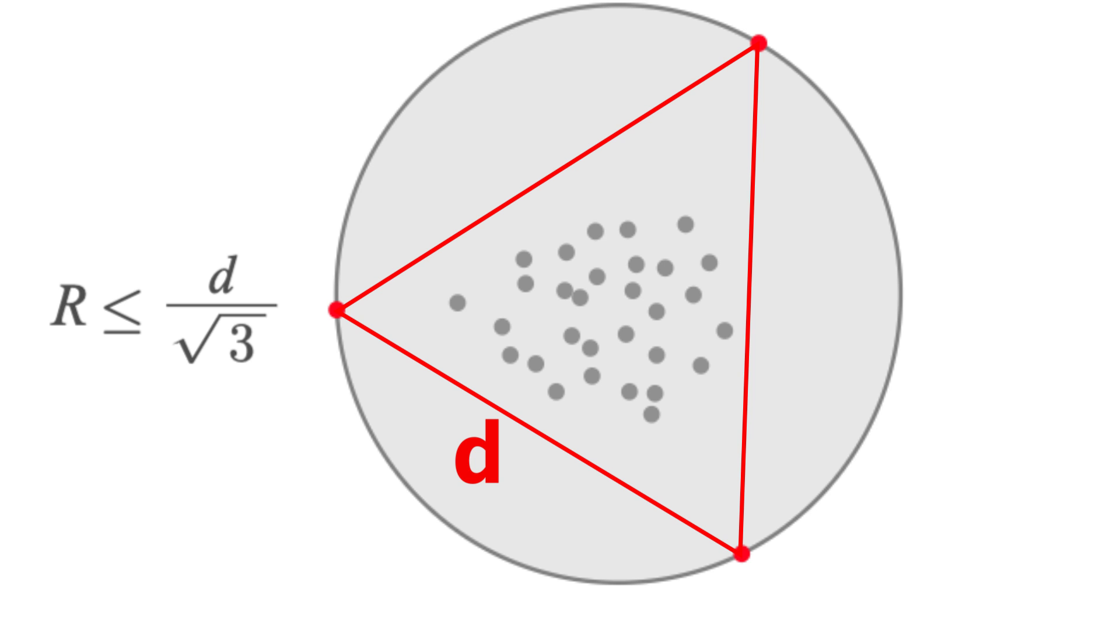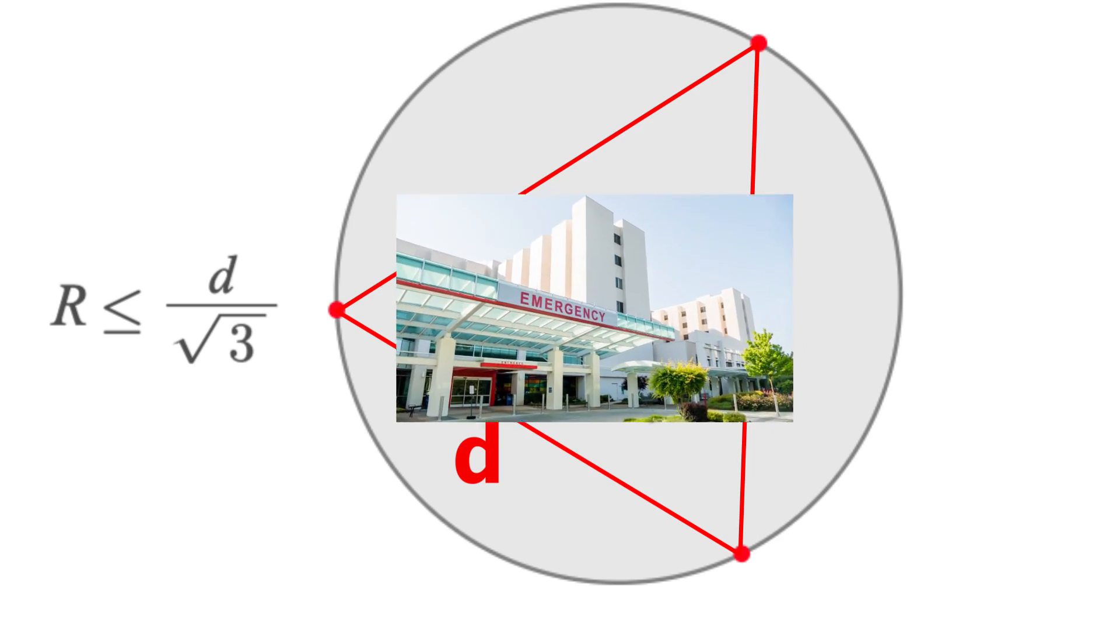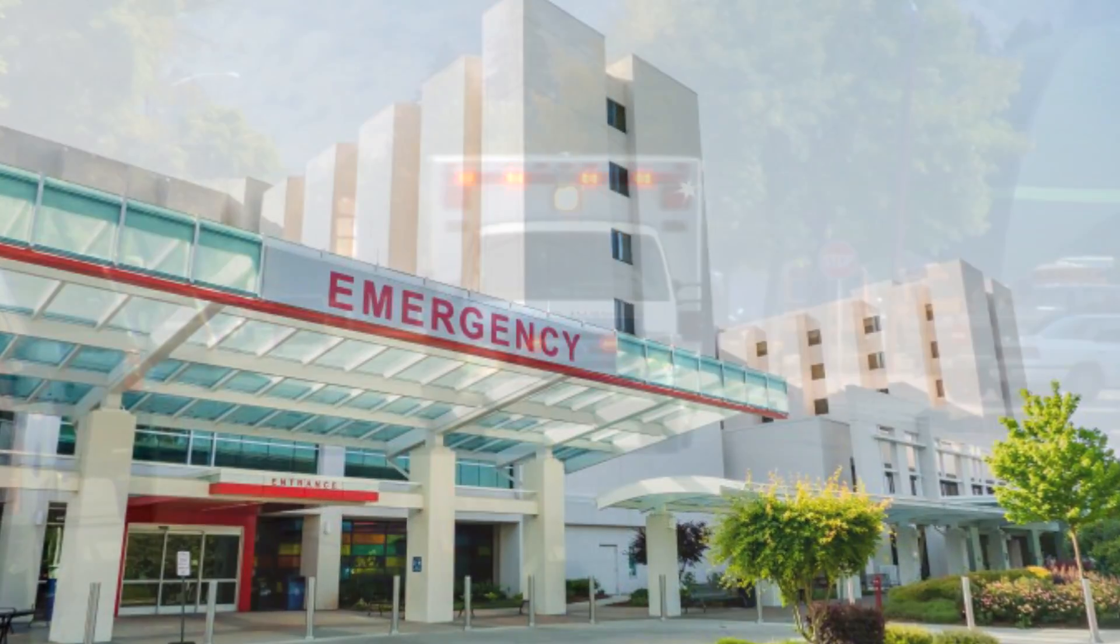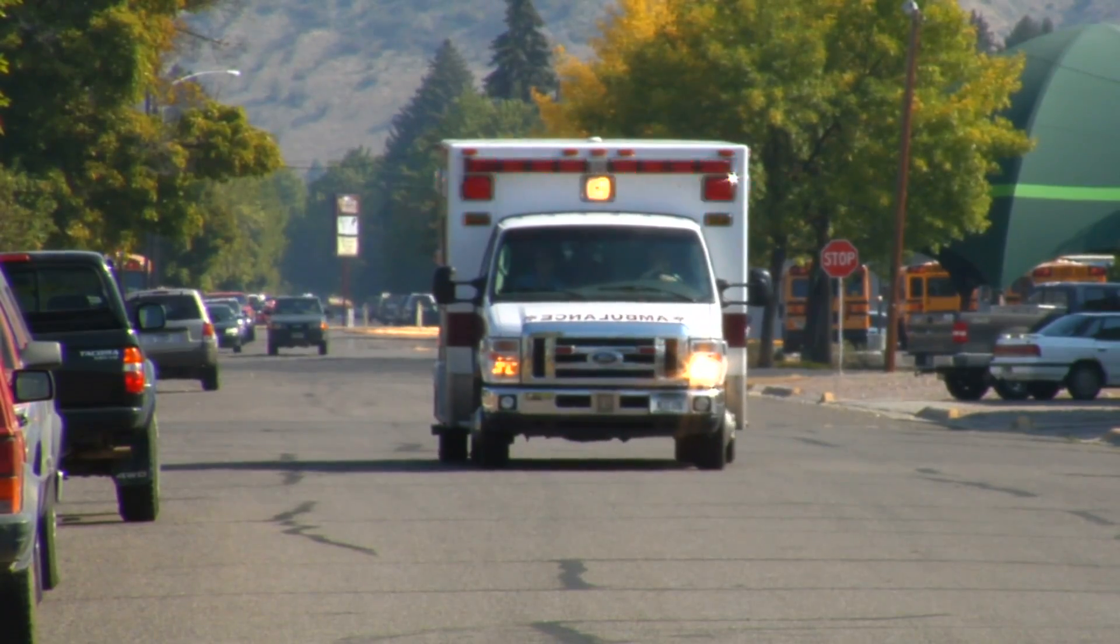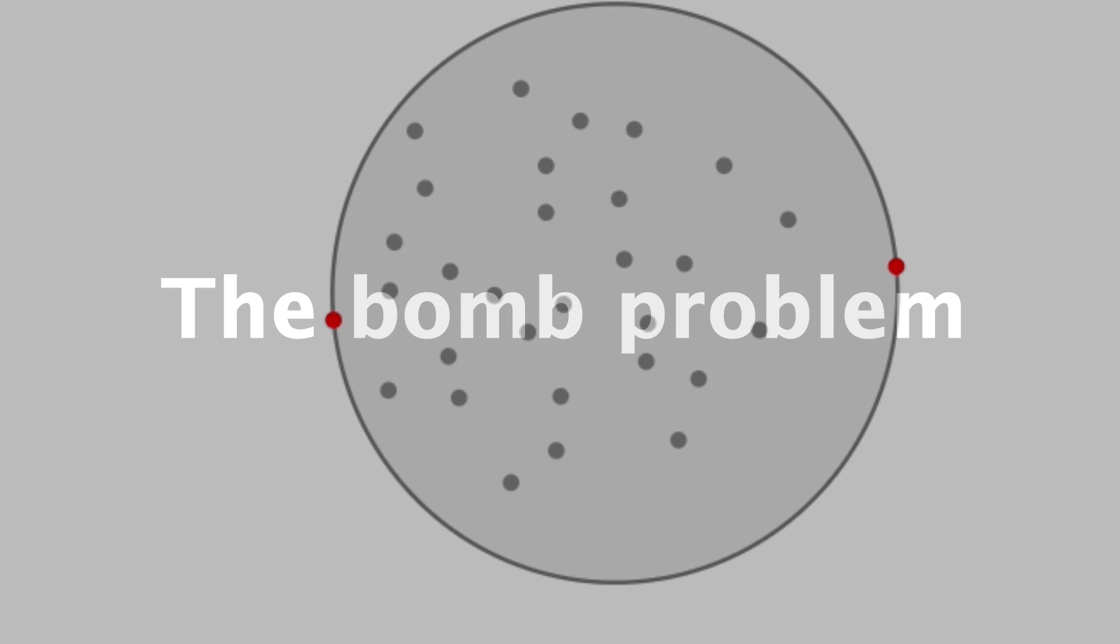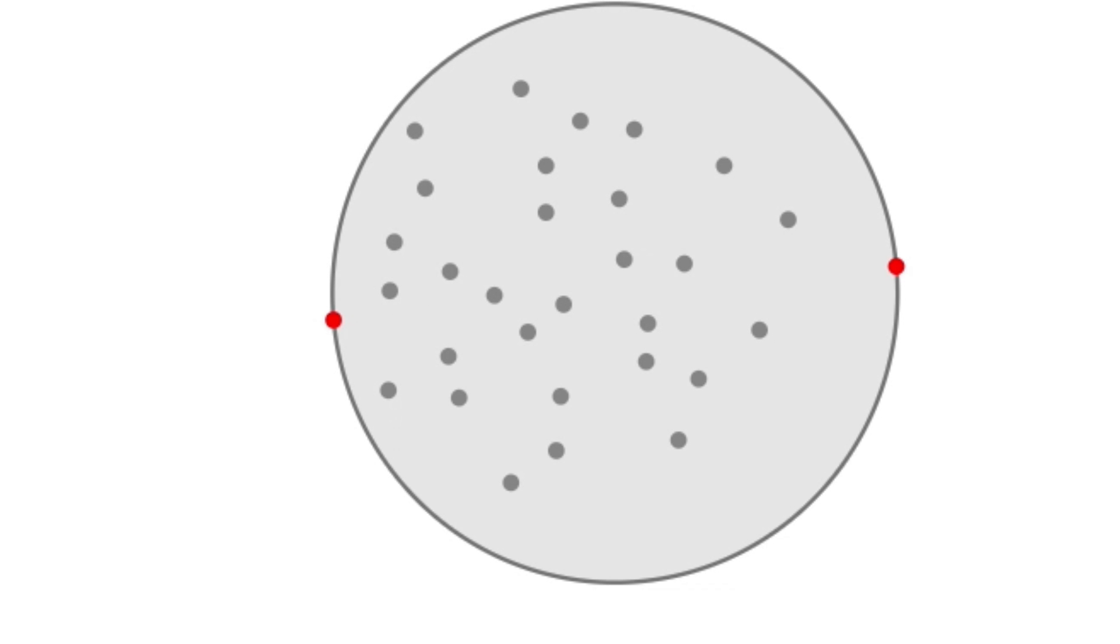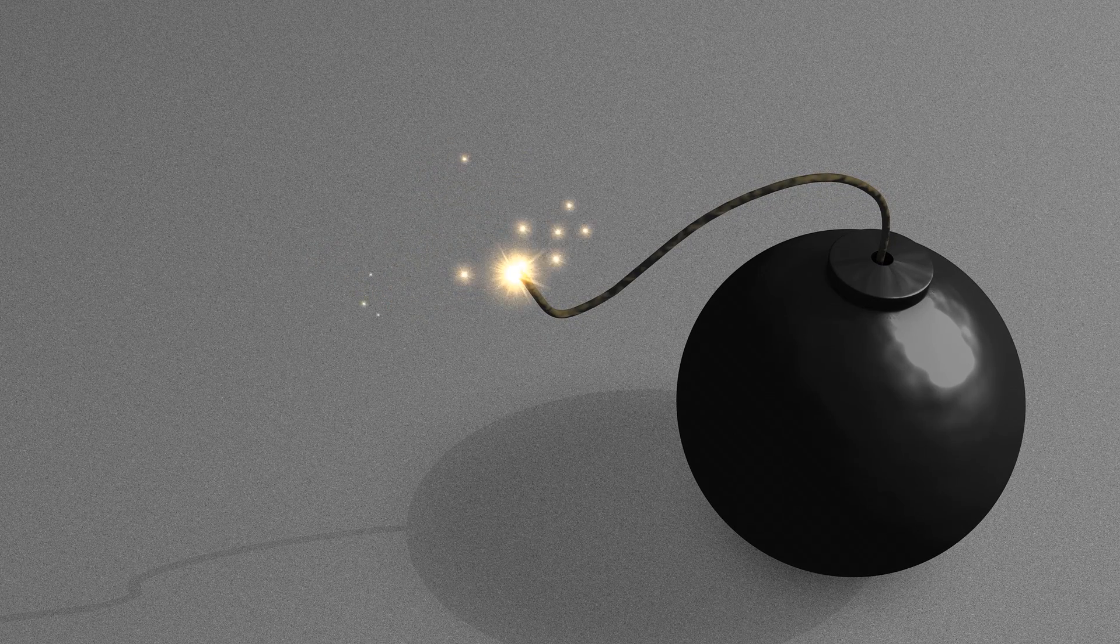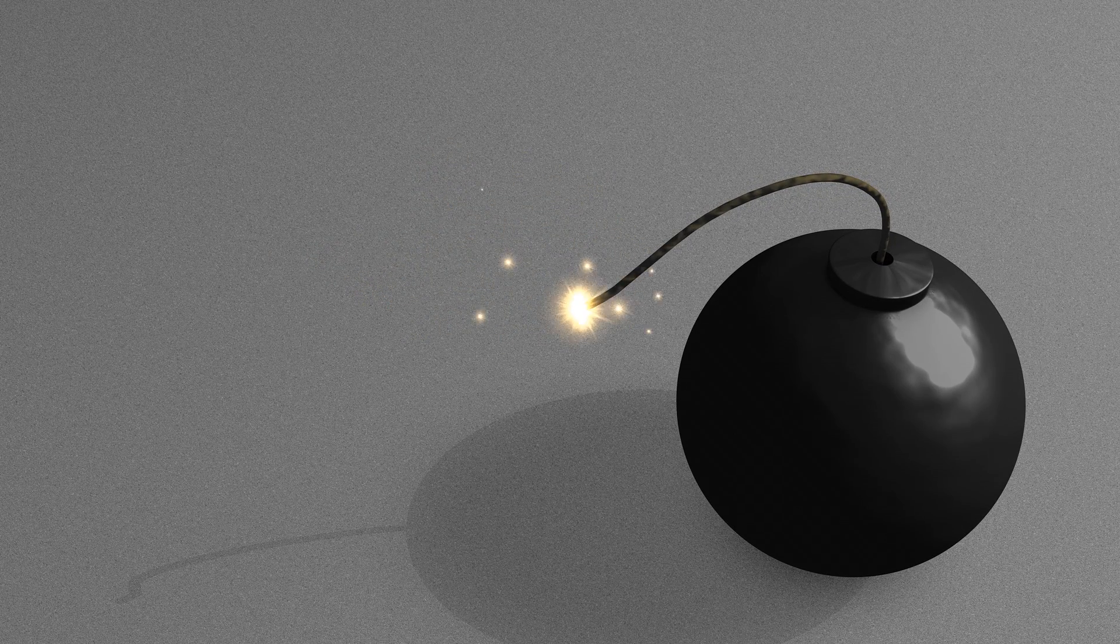Now, the reason this has applications in facility planning is because, for example, placing a hospital in the center of that circle can minimize the maximum distance an ambulance would need to travel if we assume the points are all people's homes. Sometimes this is also called the bomb problem, though, because if the points are considered targets, then a bomb placed in the center of that circle can lead to maximum damage, and the radius has to do with the required explosive force.